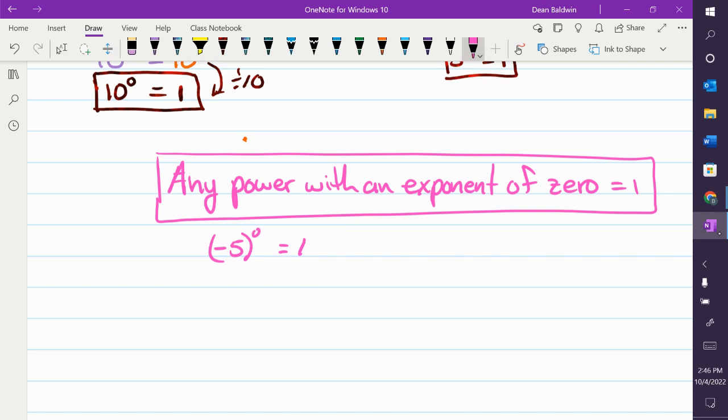If I write, I don't know, x to the 0 power, what's the answer? 1. If I write happy face to the 0 power, it is? 1. It's always, always 1.